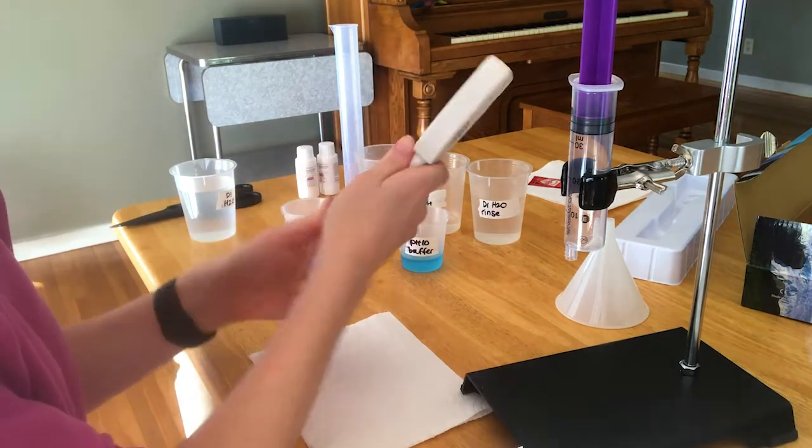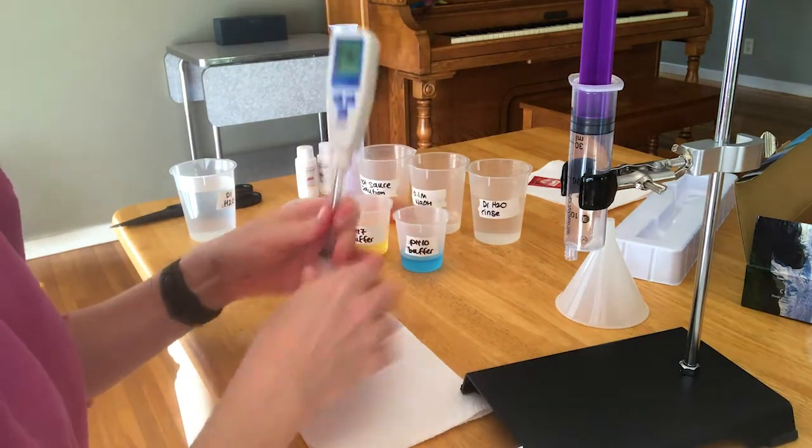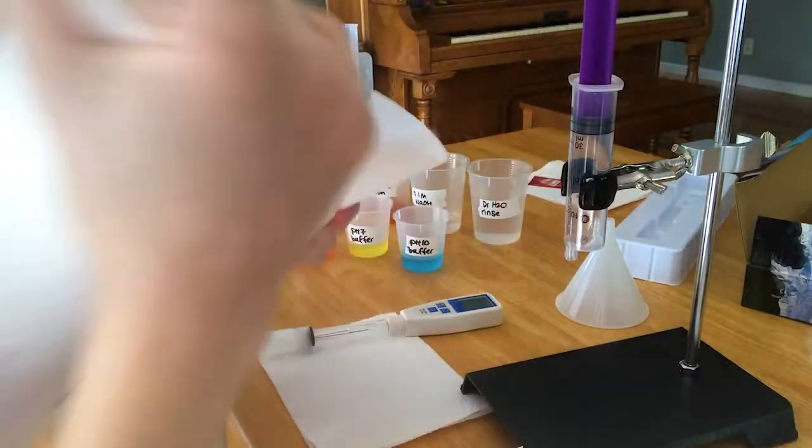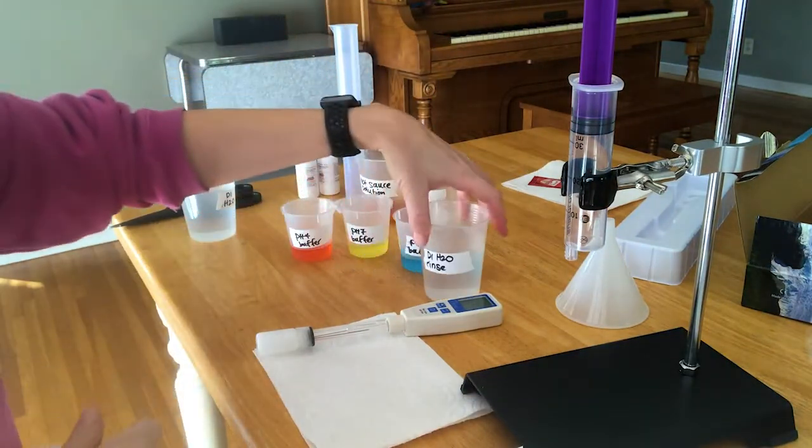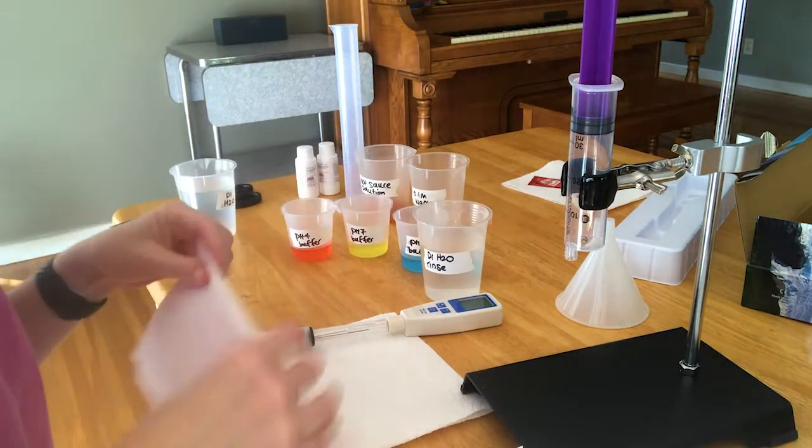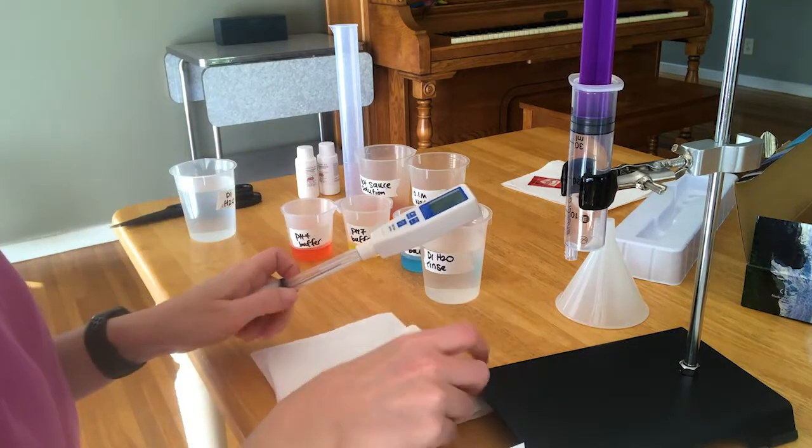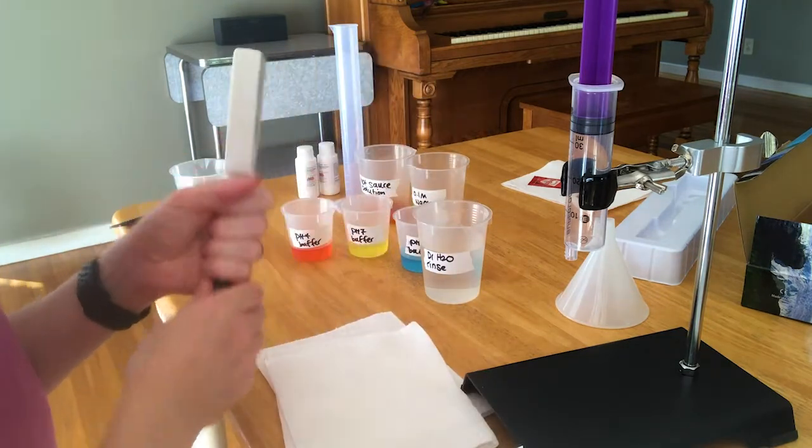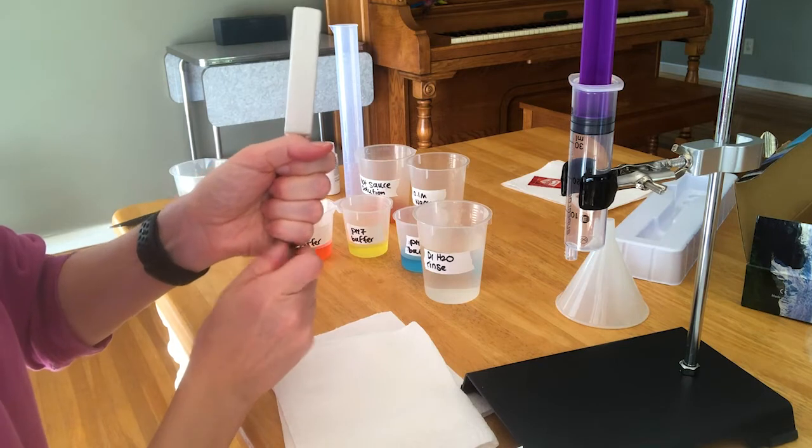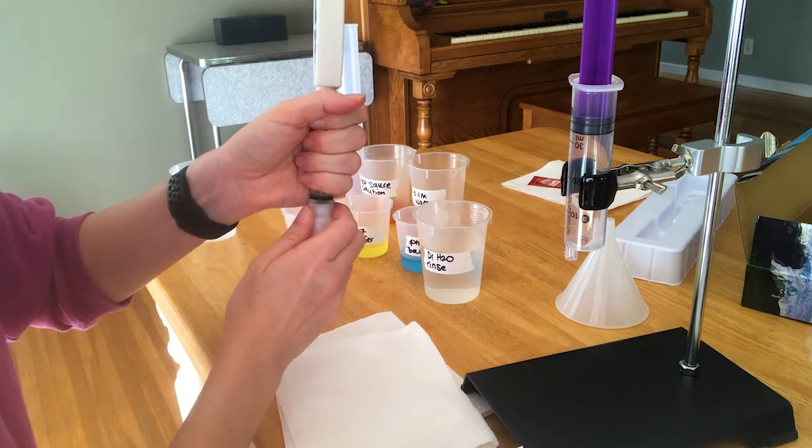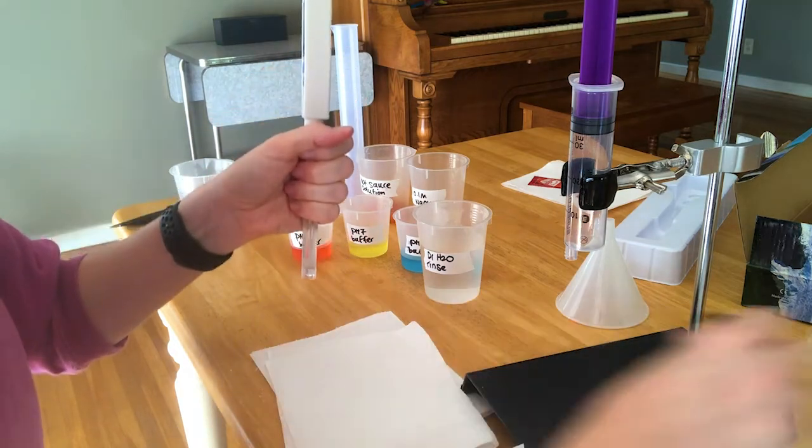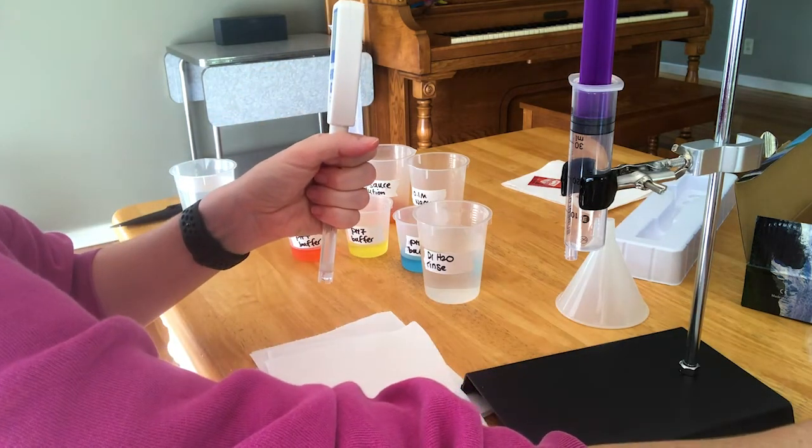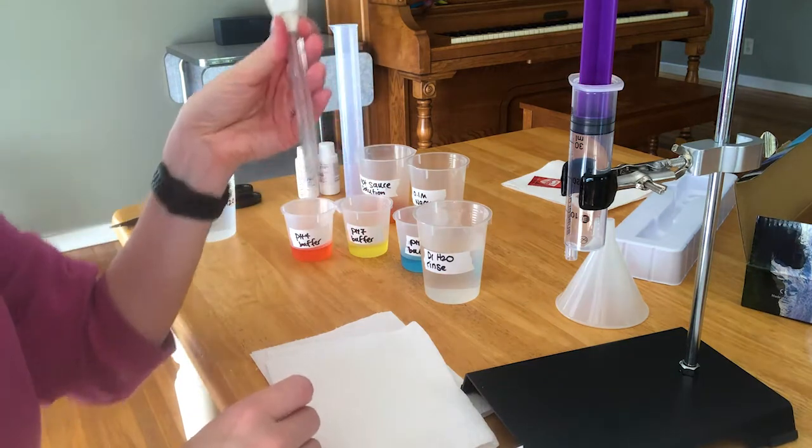We want to be able to rinse this pH meter off with distilled water after every single solution. But we don't have a wash bottle, so I'm improvising. I put some DI water into this beaker. You want to put kind of a lot so that it's dilute. This isn't ideal because you don't want to contaminate the pH meter. Since this glass electrode is sensitive to ions, you do want to use distilled water and not tap water.